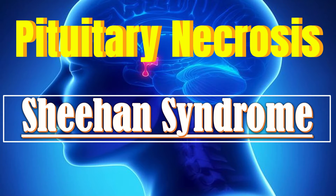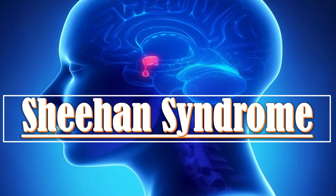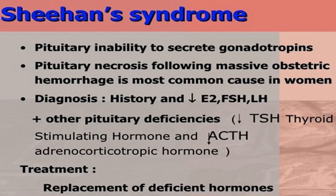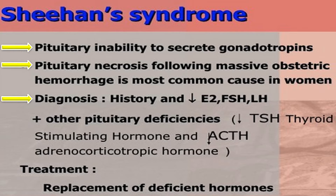Sheehan syndrome is a condition which occurs when the anterior pituitary gland is damaged due to significant blood loss after childbirth. In this condition, the pituitary gland is unable to secrete gonadotrophins. There is pituitary necrosis following massive obstetric hemorrhage, which is the most common cause in women. The diagnosis is done by taking appropriate history and by doing certain biochemical tests. There is decreased estradiol, FSH, LH, and other pituitary deficiencies like decreased thyroid stimulating hormone and decreased adrenocorticotropic hormone.